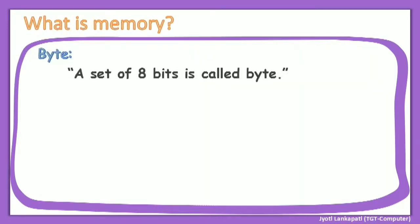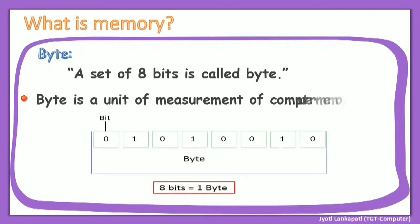Now let's understand the concept of a byte. The computer stores all its information in binary numbers, which are called bits. The set of 8 bits is called a byte. Byte is a unit of measurement of computer memory. As shown in the figure, there is a collection of 8 bits, and this collection of 8 bits is nothing but a byte. So students, 8 bits is equal to 1 byte.